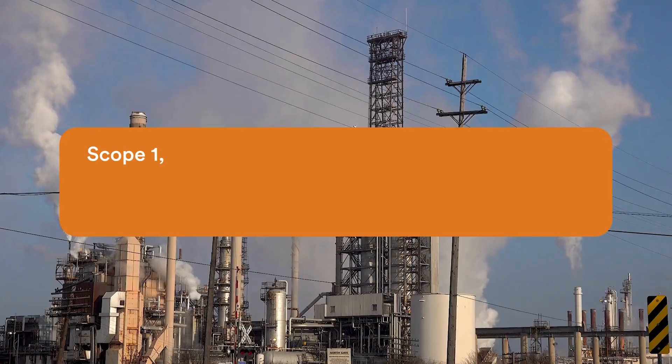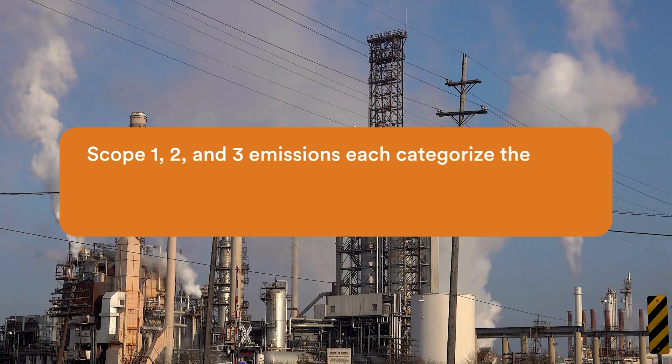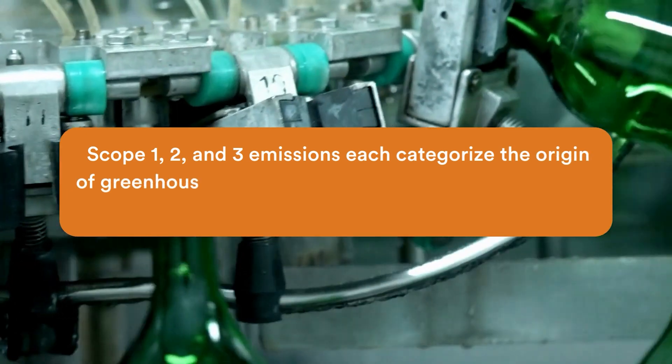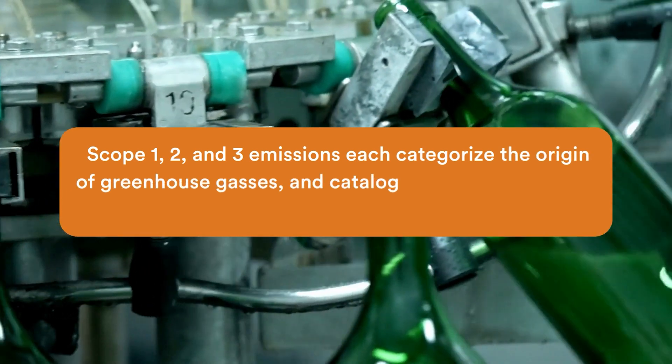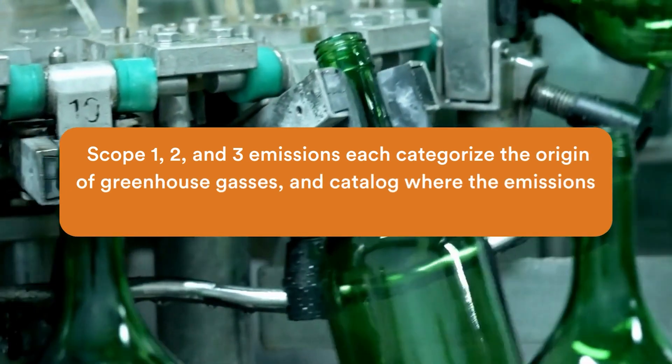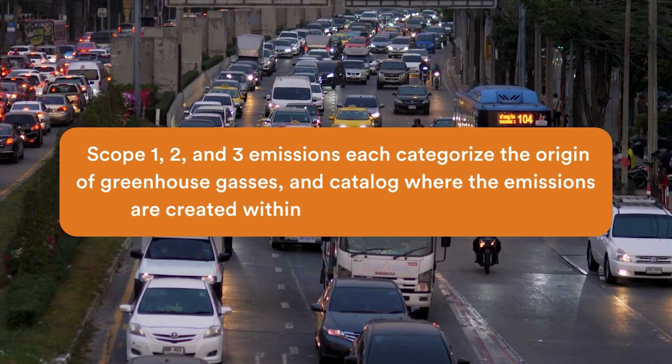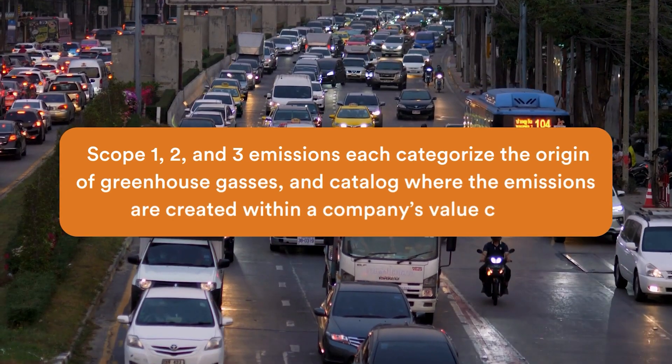With that in mind, when deciding where to focus your emission reduction efforts, it's important to reference the three emissions scopes which have been set up by the Greenhouse Gas Protocol. Scopes 1, 2, and 3 emissions each categorize the origin of greenhouse gases, and catalog where the emissions are created within a company's value chain.